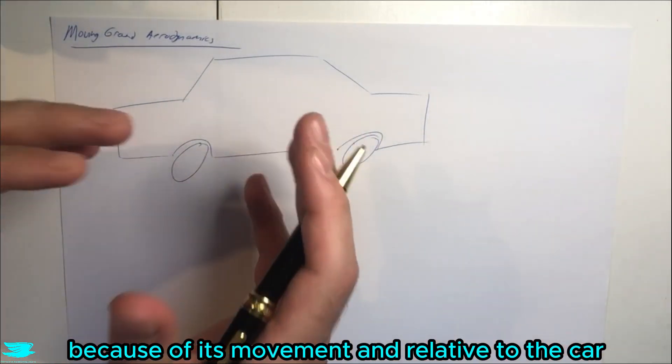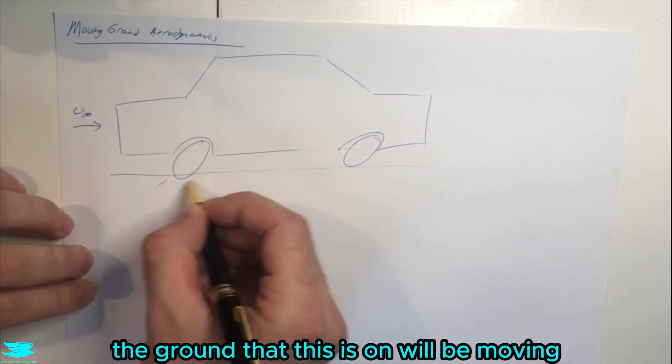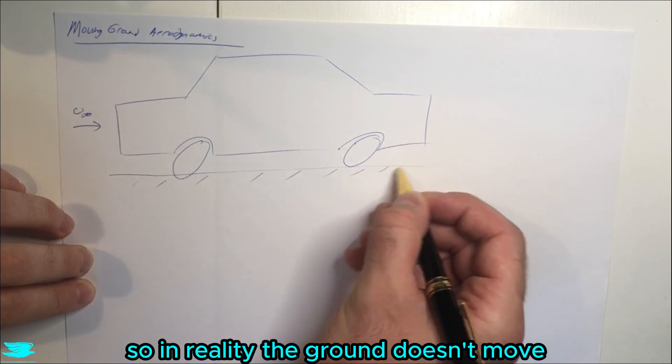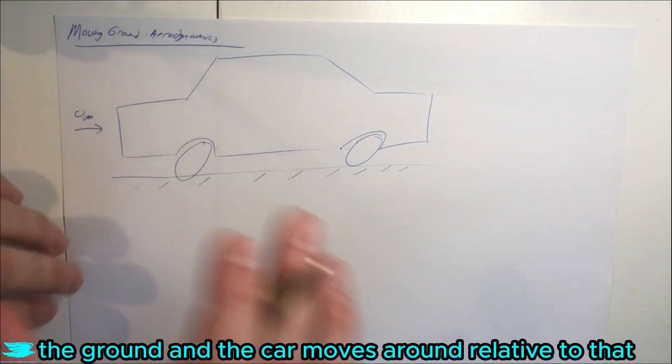Relative to the car, the ground will be moving. In reality, the ground doesn't move - we know our reference frame is the ground and the car moves around relative to that.